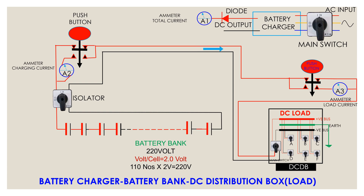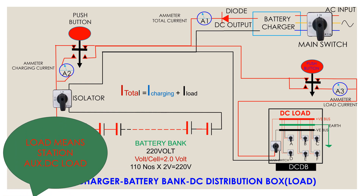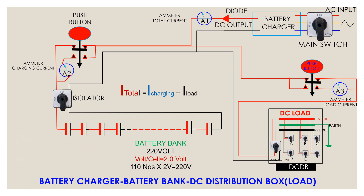If the charger fails to deliver DC to the substation auxiliary load, the battery bank supplies the load for several hours, but not for a long time. The total current supplied by the charger at any moment is equal to the charging current plus the load current of that moment.